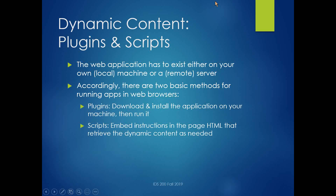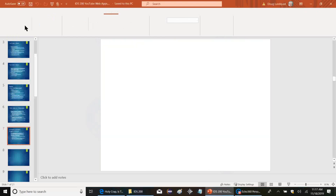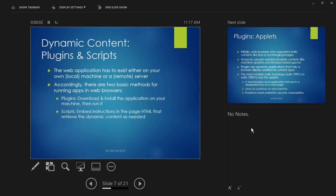So — plugin content, plugins, and scripts. A web application has to exist somewhere, either on your local machine or on a remote server. Given that basic model, there are two methods for running apps in web browsers. Number one is the plugin: in the plugin model you download and install the application on your machine and then run it — it's a separate application that runs along with your web browser, like Flash Player.